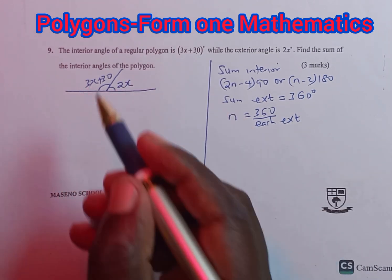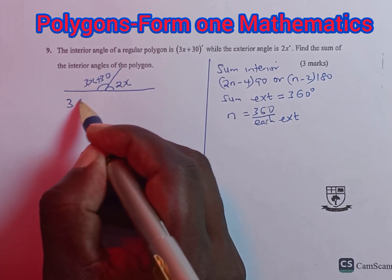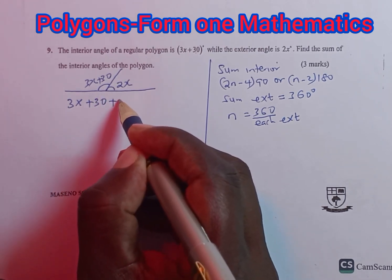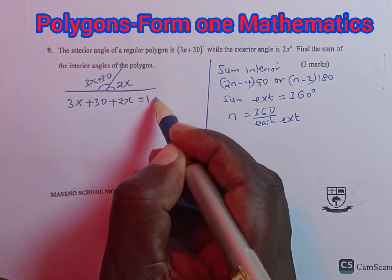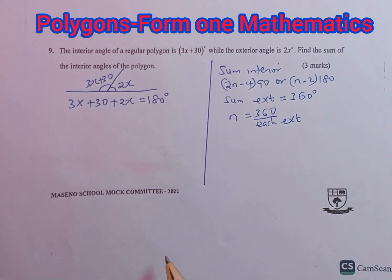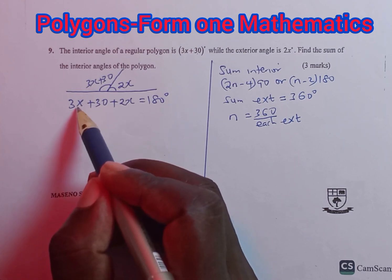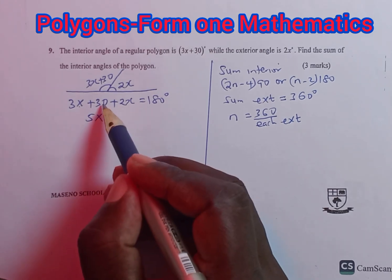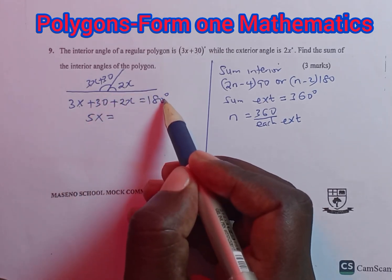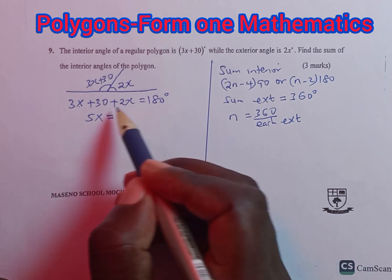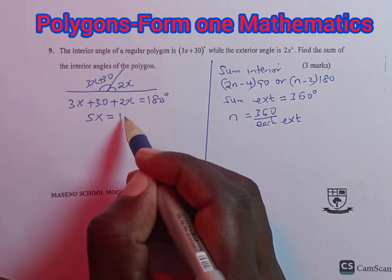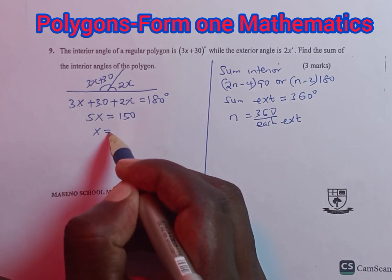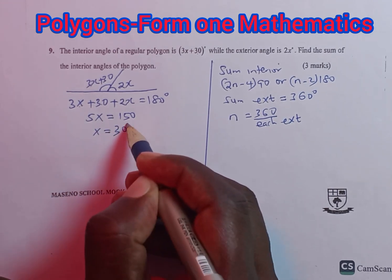Since they lie on a straight line, the interior angle, 3x plus 30, plus the exterior, 2x, must give us 180 degrees. If we collect like terms, we have 3x plus 2x giving us 5x. This equals 180 minus 30, which is 150. If you divide both sides by 5, the value of x is equal to 30 degrees.